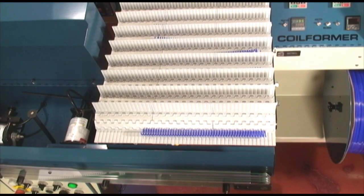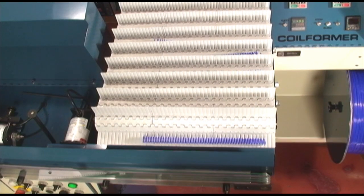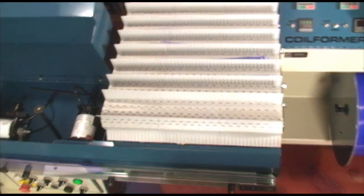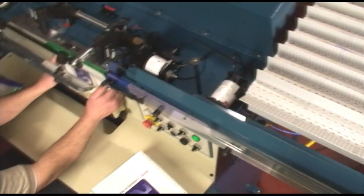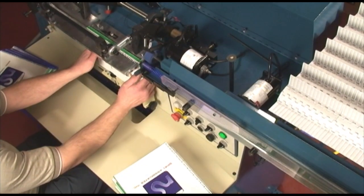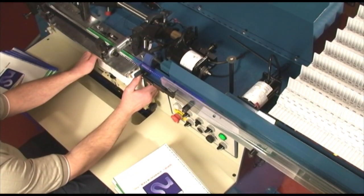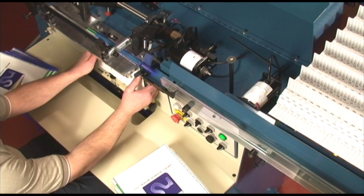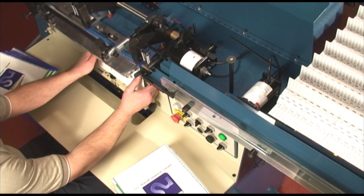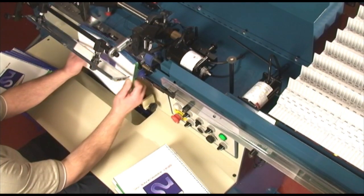The Coilmaster Automatic Plastic Coil Binding System is the fastest way to bind books, and the most efficient and economical way to produce coil for insertion. Built in the U.S., the Coilmaster System is heavy-duty, built to last, and will save you money on material and on labor costs for years to come.